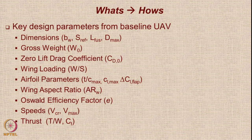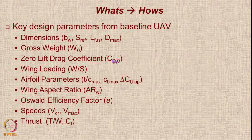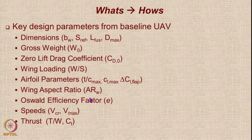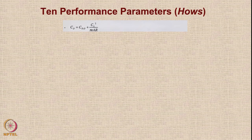How do you convert whats into hows? From the baseline UAV, you look at key design parameters: wingspan, wing reference area, fuselage length and maximum diameter, gross weight, zero-lift drag coefficient, wing loading, airfoil parameters such as maximum thickness-to-chord ratio, maximum lift coefficient, maximum CL increment due to flaps, wing aspect ratio, transport efficiency factor, cruise speed, maximum speed, thrust-to-weight ratio, and SFC. These key design parameters from the baseline UAV are taken with their numerical values, then correlated into performance parameters.